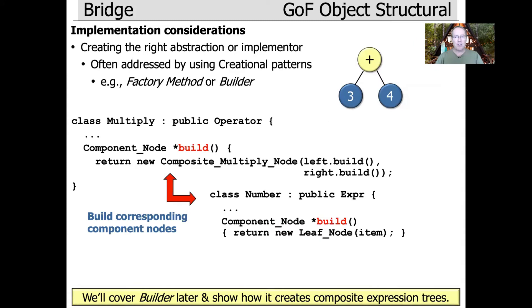There are a number of implementation considerations associated with this pattern. One obvious question is how do you create the right abstraction and the right implementer hierarchy instance? The answer, as often in pattern design, is to apply creational patterns like factory method, builder, or abstract factory. For example, you can use the builder pattern to build up elements in a composite hierarchy one chunk at a time, with the interpreter and builder patterns working together as a pattern compound. Just be aware that the way you create these things is typically by applying creational patterns.